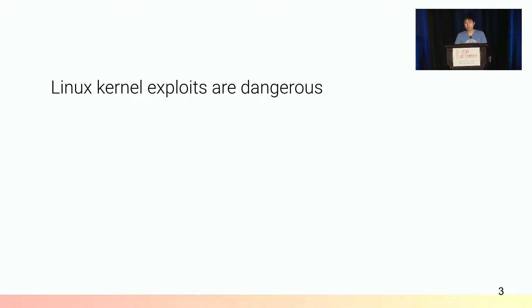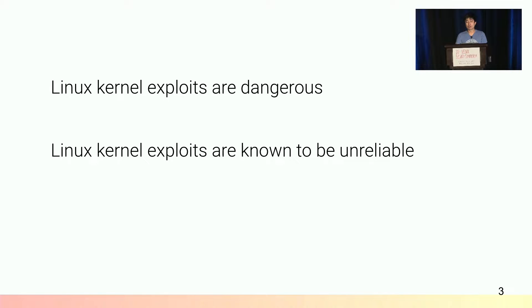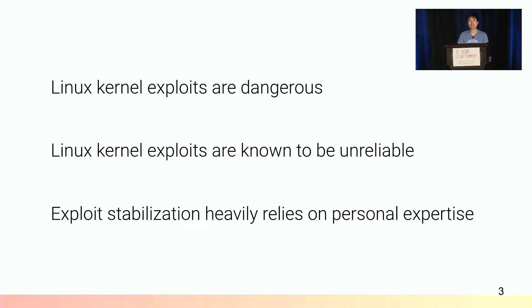We know as a fact that Linux kernel exploits are dangerous because they affect millions of devices, but at the same time they are also known to be unreliable. There are existing practices to improve exploit reliability — we call them exploit stabilization techniques. However, how and when to use them heavily relies on personal expertise. So it is important for us to understand exploit reliability to evaluate vulnerability severity, but unfortunately this topic is not covered by existing works.